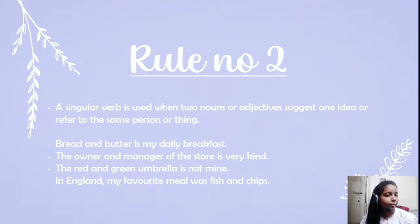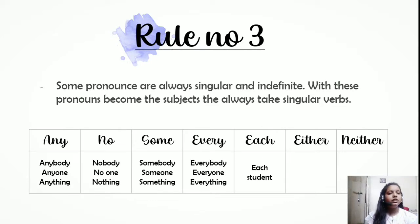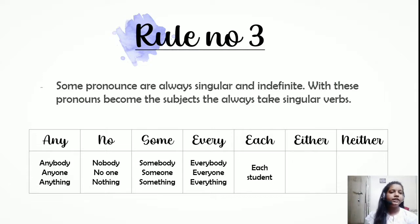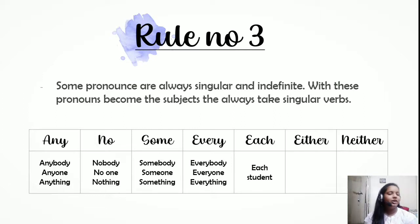Rule three: some pronouns are always singular and indefinite. With these pronouns the subject always takes a singular verb. We have a set of pronouns known as indefinite pronouns — like 'anybody,' 'anyone,' 'anything,' and similar words. These are always singular and take singular verbs. For example, 'anyone has a pen' — here 'anyone' refers to a singular subject.